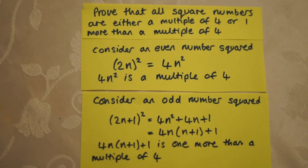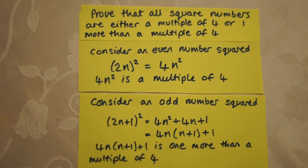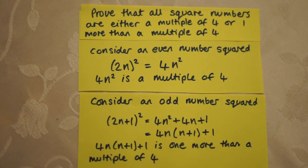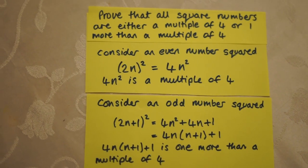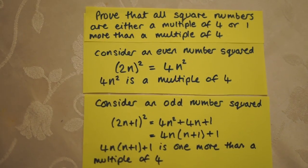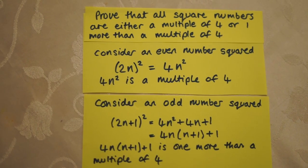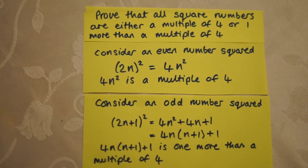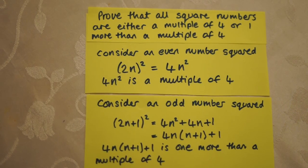As all integers are either odd or even, all square numbers are therefore either a multiple of 4 or one more than a multiple of 4. I hope this video has helped.